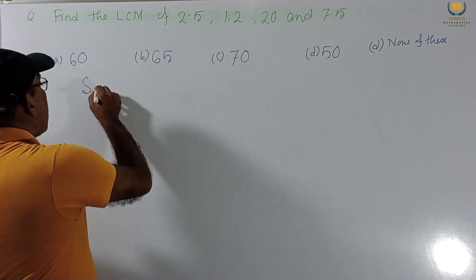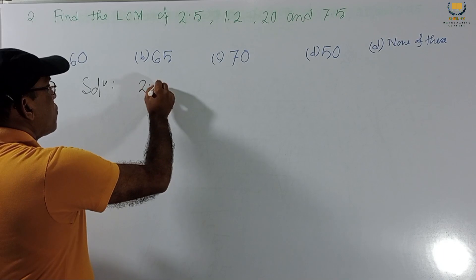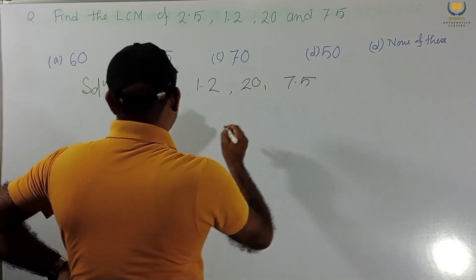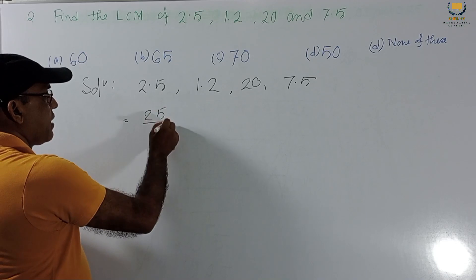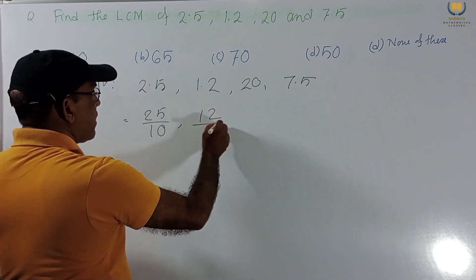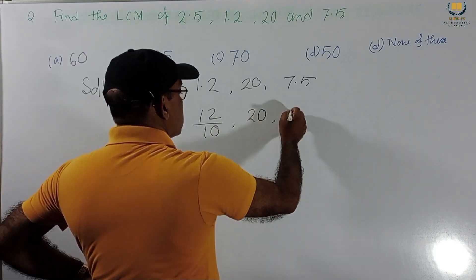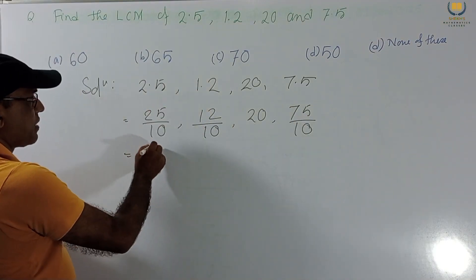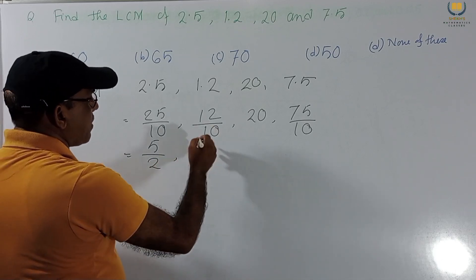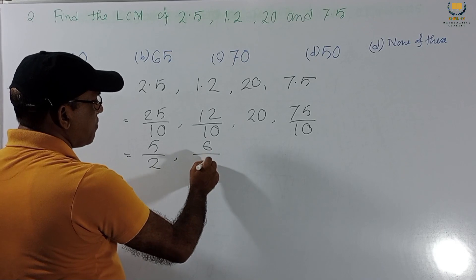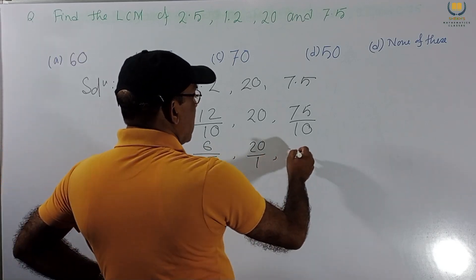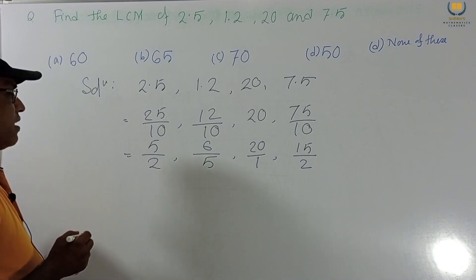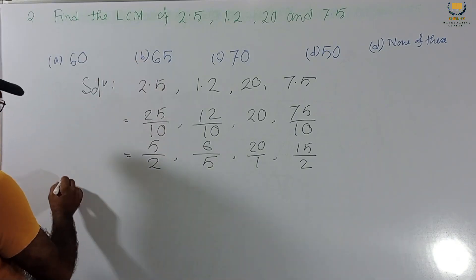Solution: Rewrite the numbers — 2.5 = 25/10, 1.2 = 12/10, 20 = 20/1, 7.5 = 75/10. Cancelling to lowest form: 25/10 = 5/2, 12/10 = 6/5, 20/1 = 20, 75/10 = 15/2. Now our requirement is LCM.